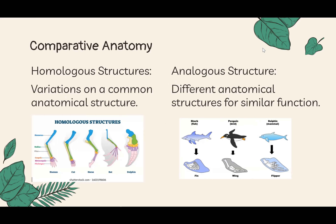Now let's look at comparative anatomy. There are two important types of structures: homologous structures and analogous structures. Homologous structures are variations on a common structure — for example in humans, cats, horses, bats, and dolphins. Each uses that structure differently: dolphins use it to swim, bats to fly, humans to handle objects. They have different uses but share a common structure. Analogous structures are the opposite: very similar function but very different structure.